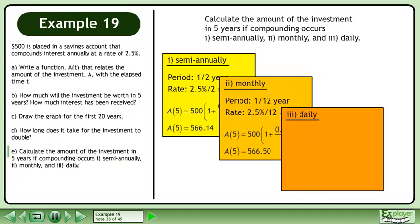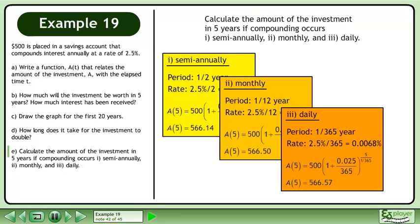Now we'll calculate the amount compounded daily. The period is 1/365th of a year. There are 365 compounding periods so divide the interest rate by 365 to get approximately 0.0068%. Write this as a function. This returns an amount of $566.57.